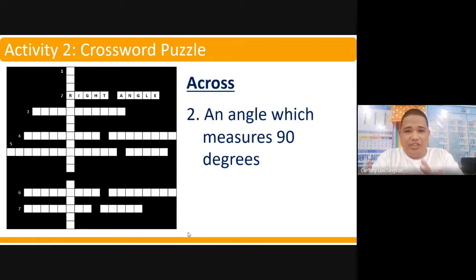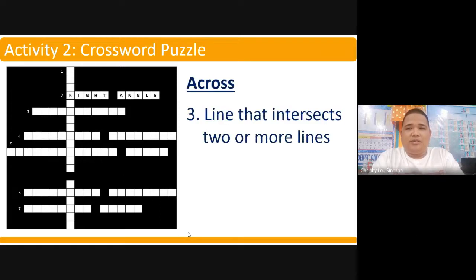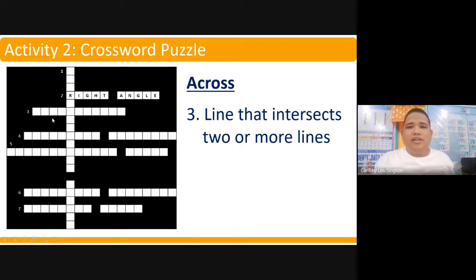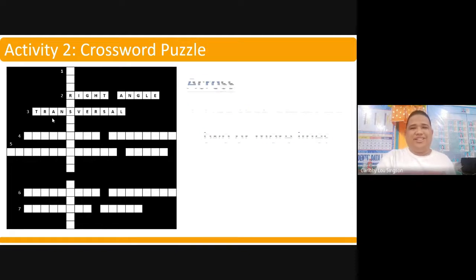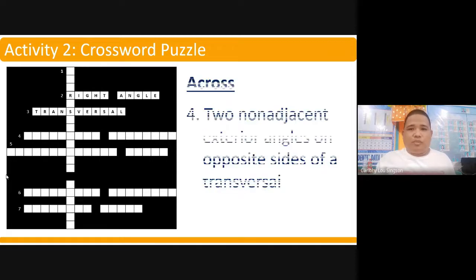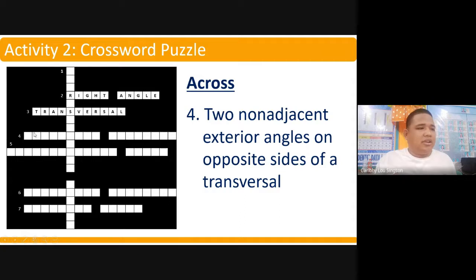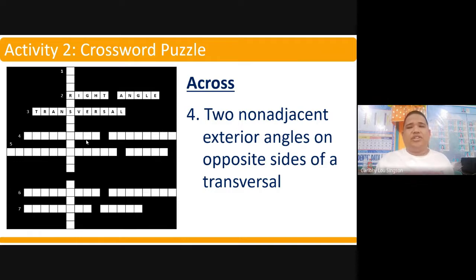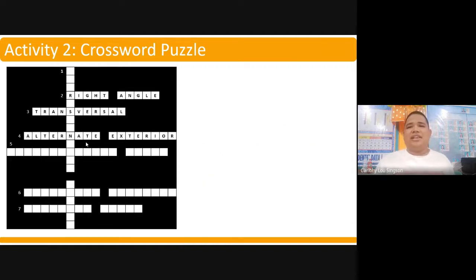Let's proceed to number three across: a line that intersects two or more lines. What do we call that one? Of course, that is a transversal. Number four: two non-adjacent exterior angles on opposite sides of a transversal — those are called alternate exterior angles.